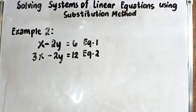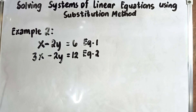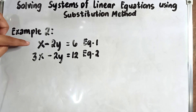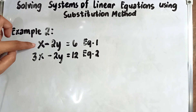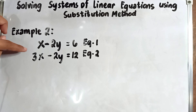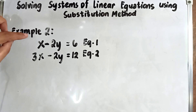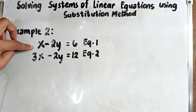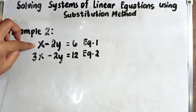For our second example, equation 1 is x minus 2y equals 6, and equation 2 is 3x minus 2y equals 12. As you observe, there is no variable we can immediately solve for directly, unlike the first example where x was already isolated. So what we are going to do is solve for one variable — since the coefficient of x in equation 1 is 1, it is easier to solve for x.